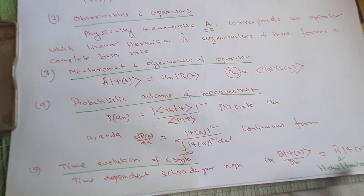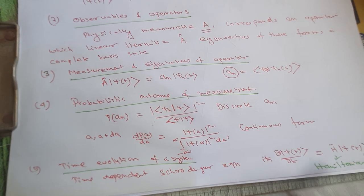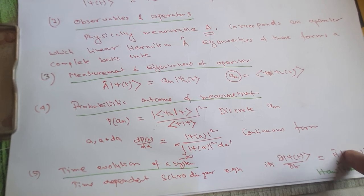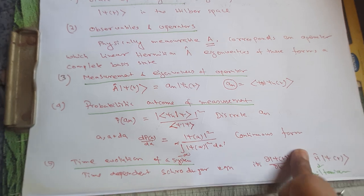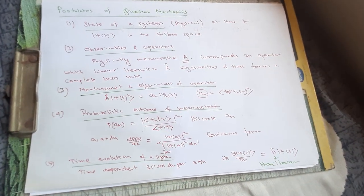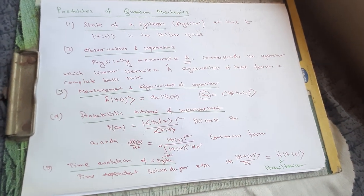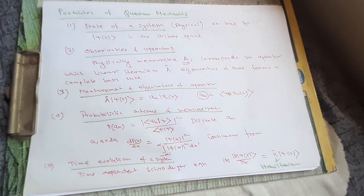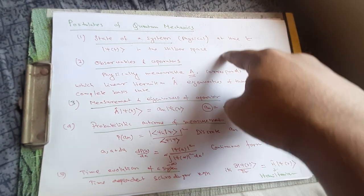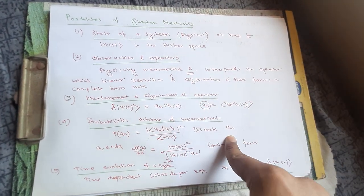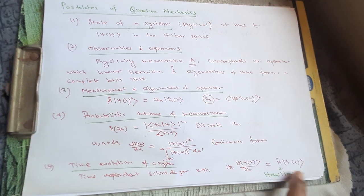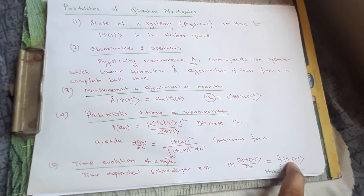So Ĥ is the total energy operator for a particular time t. These are the five postulates of quantum mechanics, based on which the whole theory is built. There are two sets: the first four postulates deal with a static snapshot at a particular time t, while the last postulate governs time evolution.